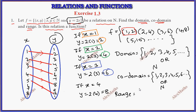The range consists of the connected elements: 2, 4, 6, 8, 10, 12, and so on — the set of even natural numbers.